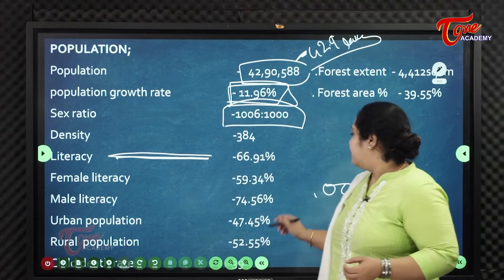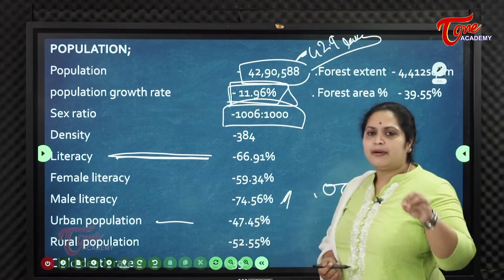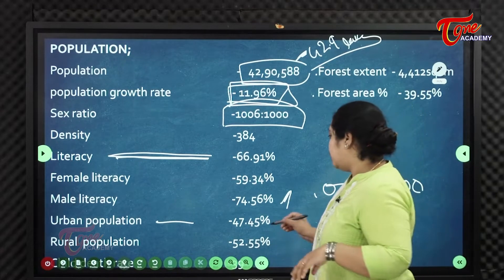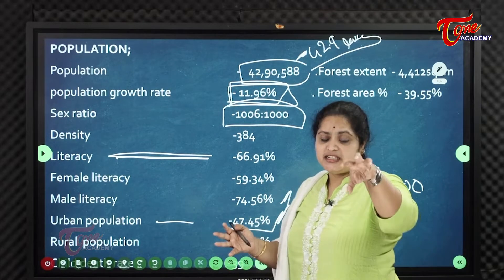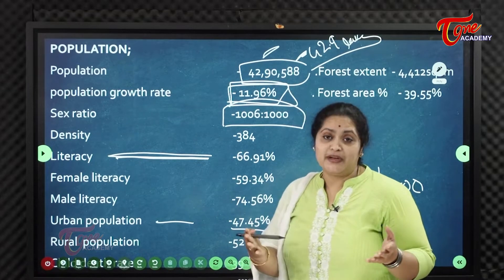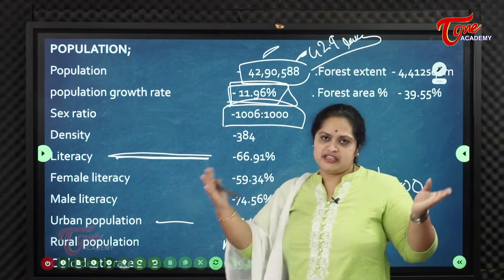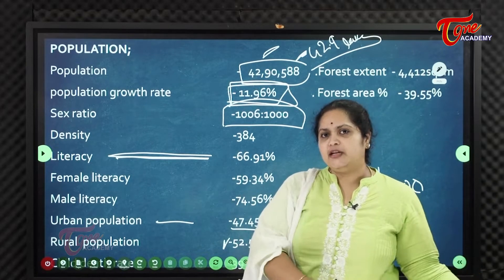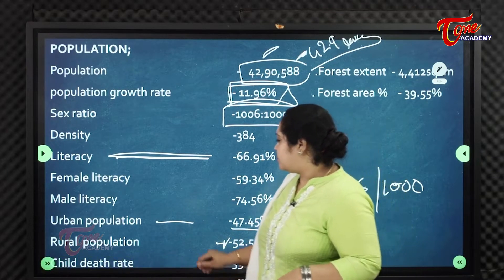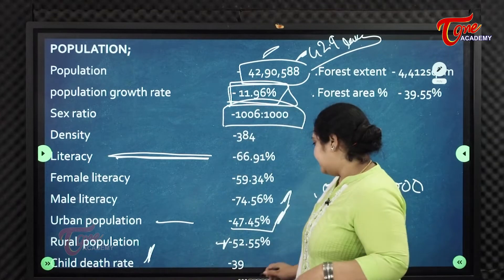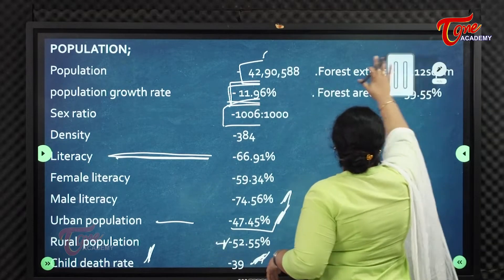The urban population is 47.45%, meaning nearly 50% of the population lives in urban areas and approximately 52% in rural areas. The child mortality rate is 39 children per thousand.